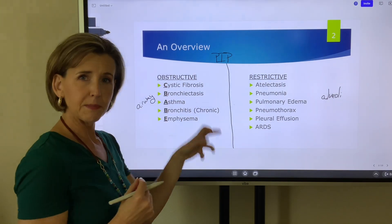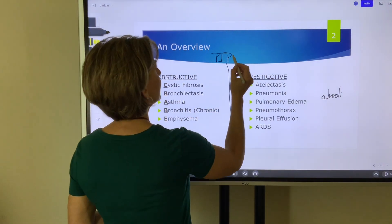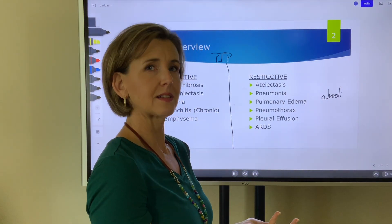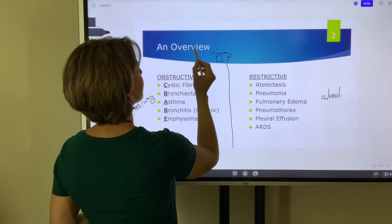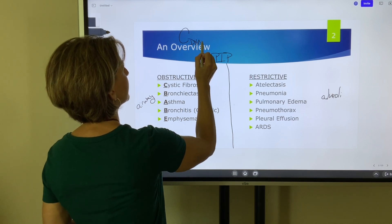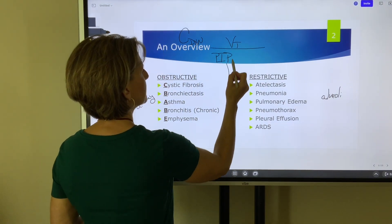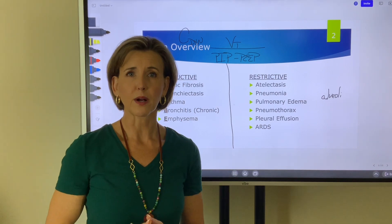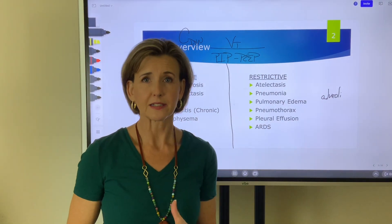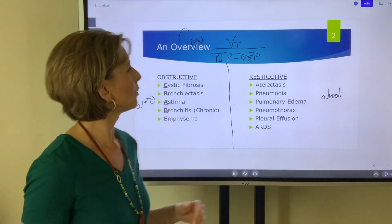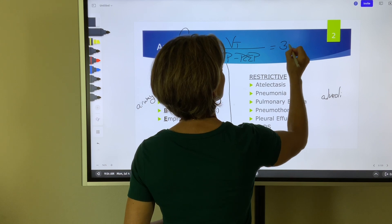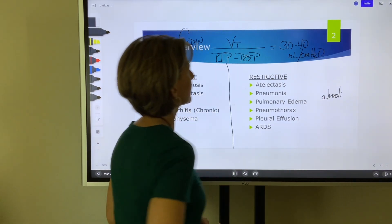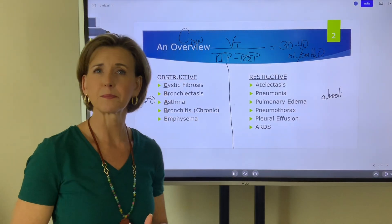The formula that uses peak inspiratory pressure is dynamic compliance. The formula for dynamic compliance is: tidal volume divided by PIP minus PEEP. So if PIP increases, you know there's a problem; if dynamic compliance decreases, there is a problem. But you just don't know where. Normal dynamic compliance is 30 to 40 mLs per centimeter of water pressure. Dynamic compliance and PIP tell us nothing except that a problem exists.